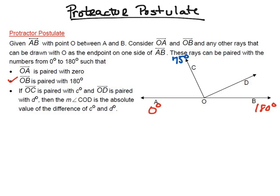For this example, we're going to assume that ray OC would be at 75 degrees. So imagine we have a protractor, and if we were looking at it, we would notice that ray OC is pointing at 75 degrees. Then we would continue on looking at ray OD — that's this ray right here — and if we look at the protractor, we would find where it falls, and in this particular case, we're going to go with 140 degrees.